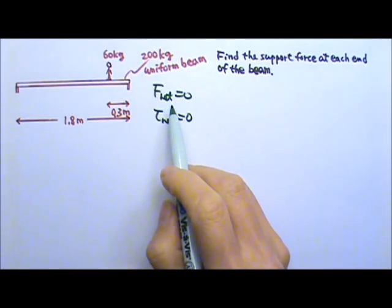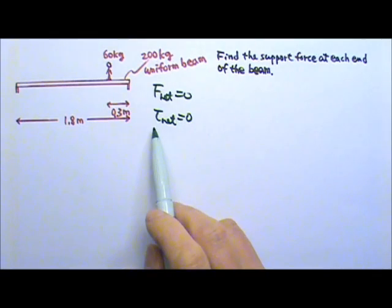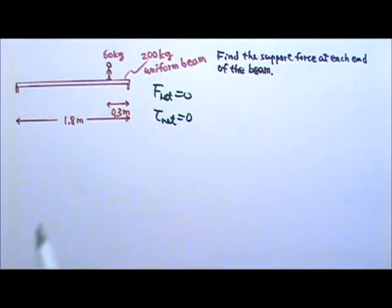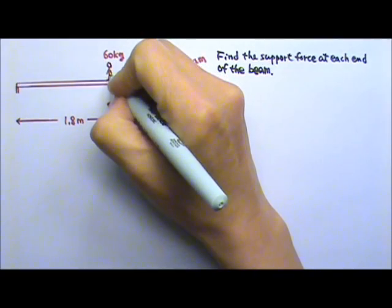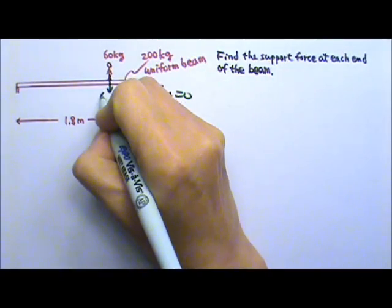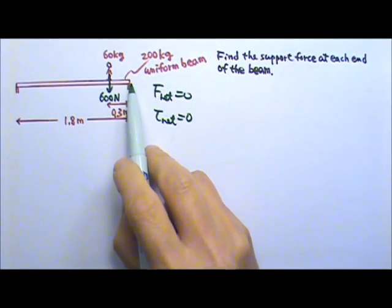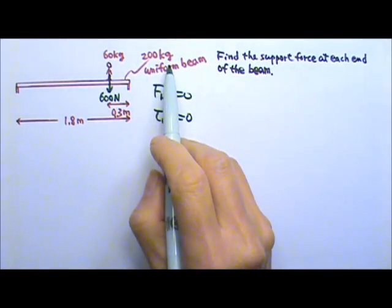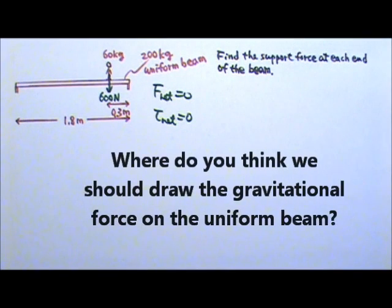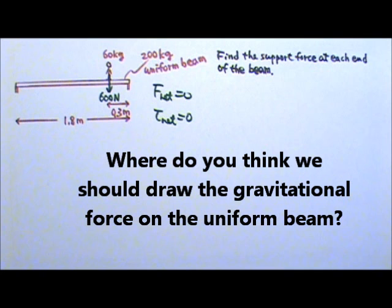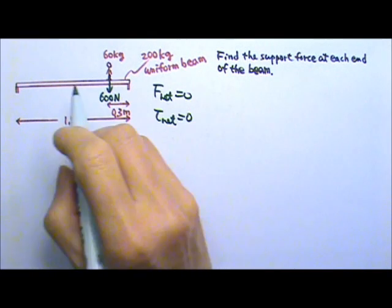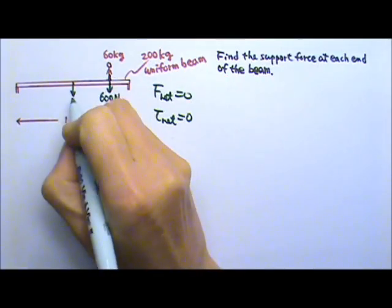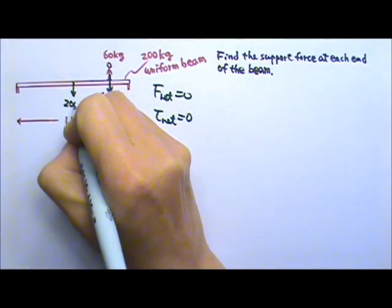We're dealing with forces, so we need to draw a force diagram. Because we have to deal with torque, we have to draw all the forces wherever they act on the person and the beam. We have gravitational force acting on the person — that's 600 N — and gravitational force acting on the uniform beam. Because this beam is uniform, the 2,000 N weight acts right in the middle at the center of mass. So this here is 2,000 N.